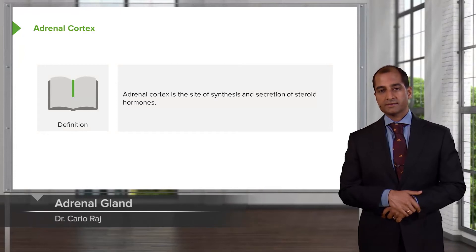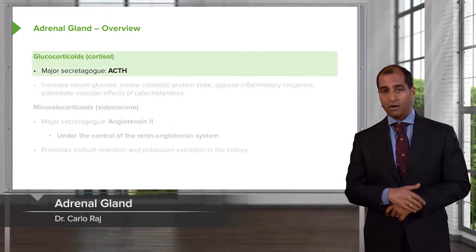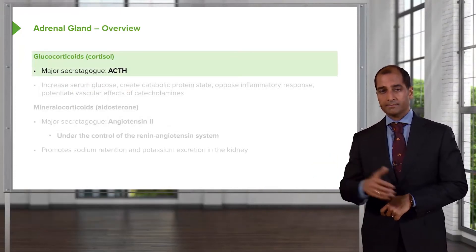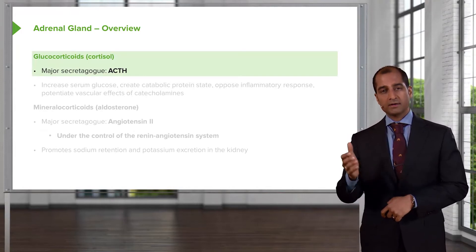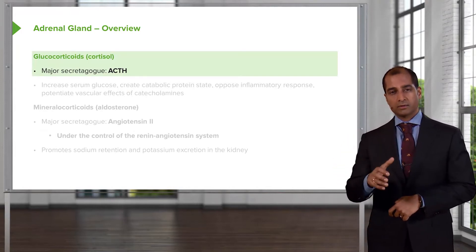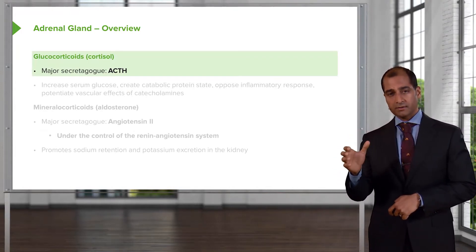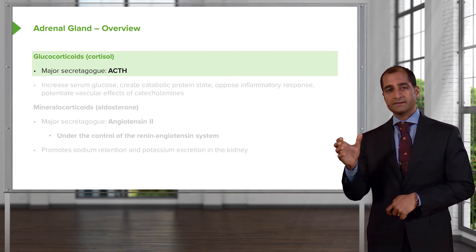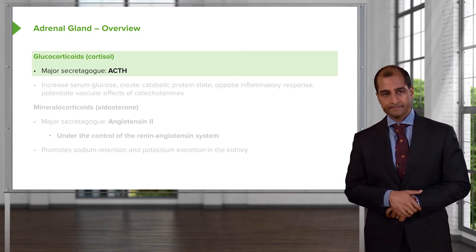The adrenal cortex — synthesis and secretion of steroid hormones. All steroid hormones will pass through the membrane. All steroid hormones from the adrenal cortex have their receptors located in the cytoplasm. Keep that in mind.